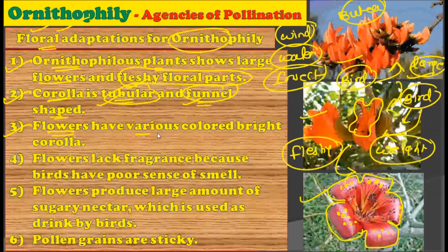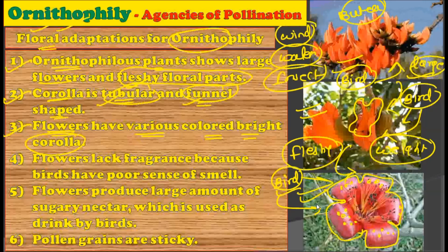The third adaptation is that the flowers have variously colored bright corollas. As you can observe in these plants, they have variously colored corollas. Having a very bright colored corolla is advantageous because birds can see these flowers from kilometers away. In order to be noticed by birds, these plants have a very bright corolla so birds can spot it from a great distance and come to the flower. The bright color is essentially a notification for birds that there is a flower containing a huge amount of nectar.